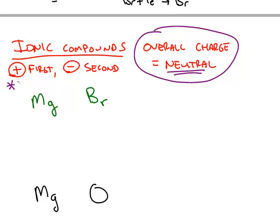And we can figure out the formula because the overall charge on an ionic compound must be neutral. You're always going to write the cation first and the anion second. So we can take the charge of magnesium that we just saw is a positive 2 and the bromine is a negative 1.